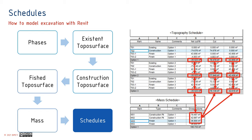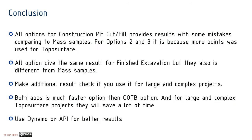Option 1 (done by hand) gives the worst results, and Option 2 is in the middle. In conclusion: all options for construction pit cut/fill provide results with some discrepancies compared to mass samples. For options 2 and 3, this is because more points were used for the top surface. All options give the same results for the finished excavation, but they also differ from mass samples. You need to make an additional result check if you use it for large and complex projects. Both apps are a much faster option than out-of-the-box tools, and for large and complex top surface projects they will save a lot of time. Use Dynamo or API for better results and different configurations of tools.